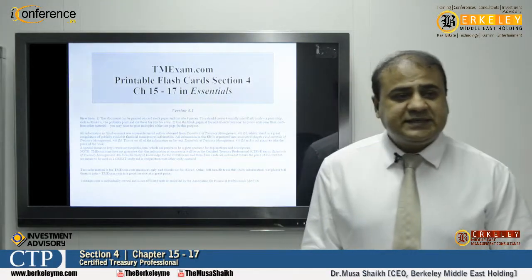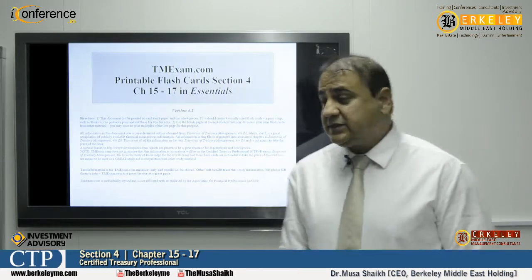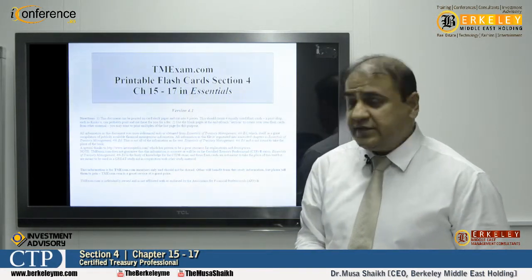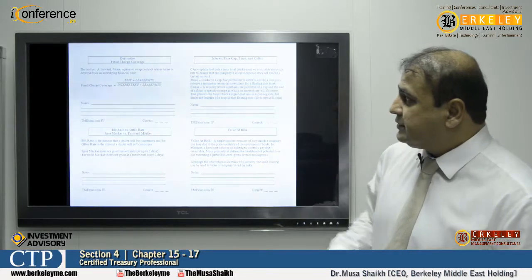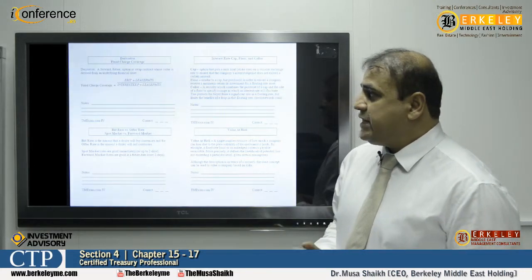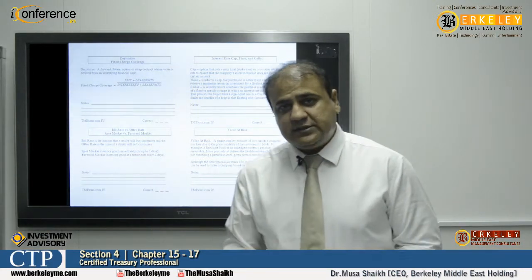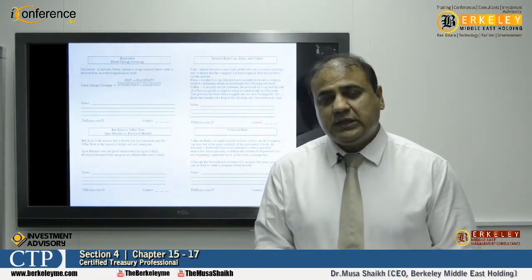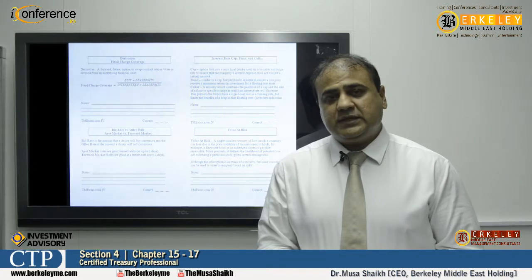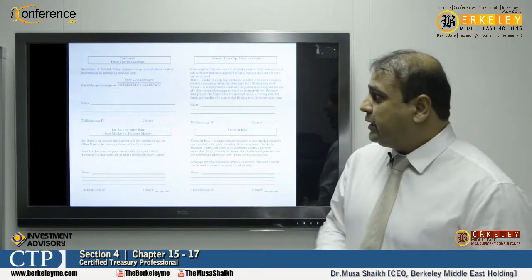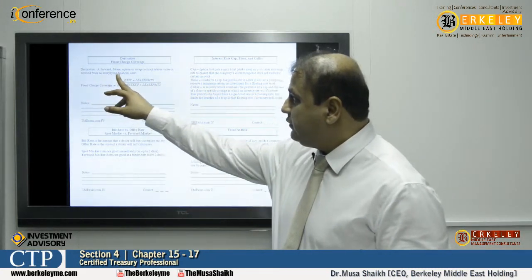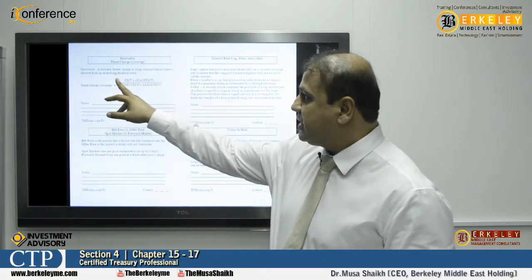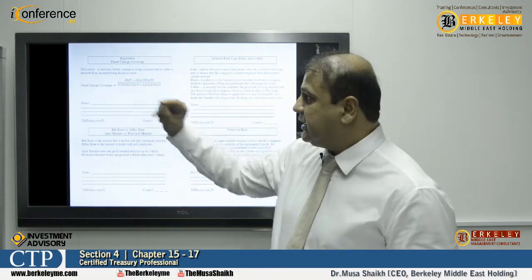Now we will discuss section four. These are the readings belonging to chapters 15, 16, and 17. I will start my discussion from derivatives. A derivative is a term derived from an economic activity that will take place in the future. A derivative is a forward, future, option, or swap contract whose value is derived from underlying financial assets.